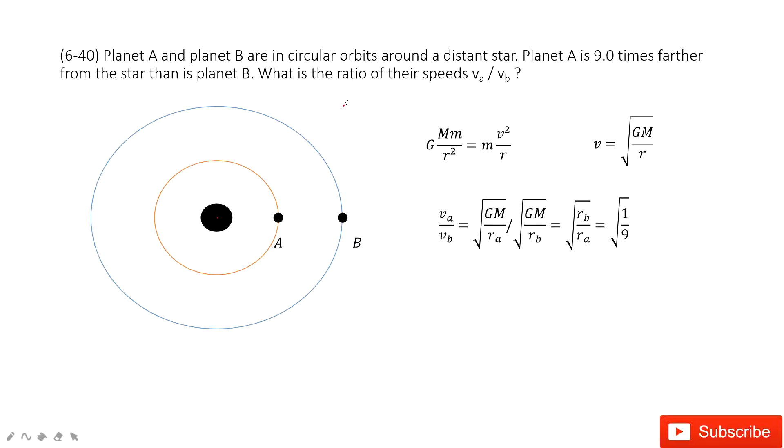I ask you to find the ratio of the speed. So how can we get speed? Because these planets A and B do the circular motion.